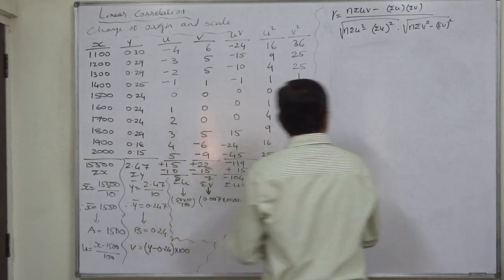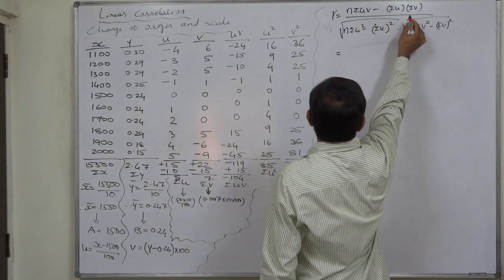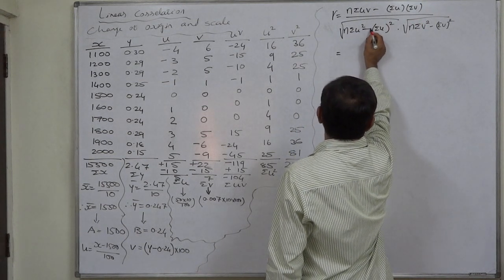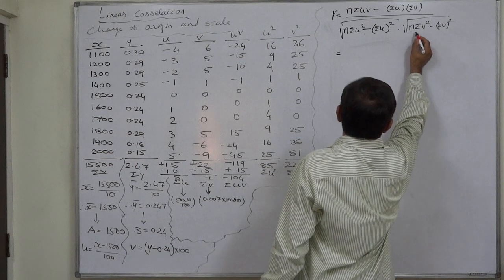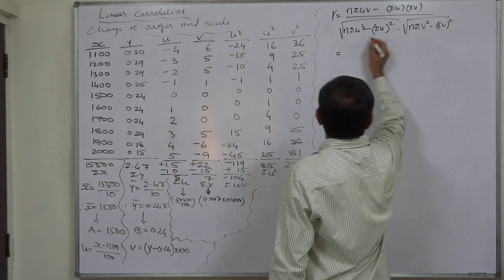Now let us substitute these five summations into our favorite formula: n times sigma uv minus sigma u times sigma v, upon square root of [n times sigma u square minus (sigma u) whole square] times square root of [n times sigma v square minus (sigma v) whole square].